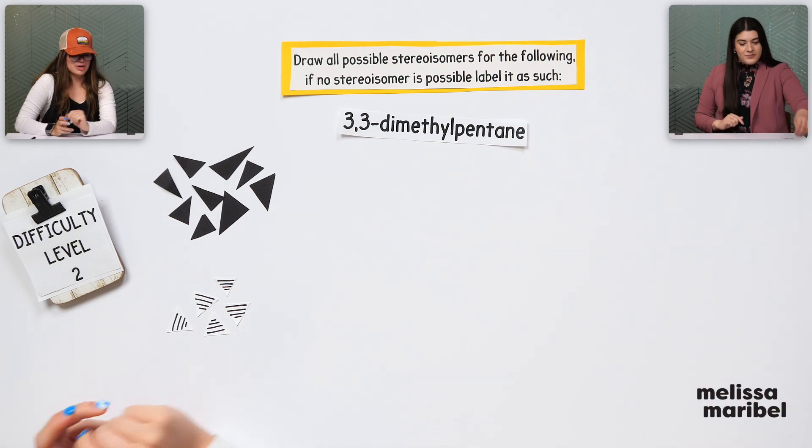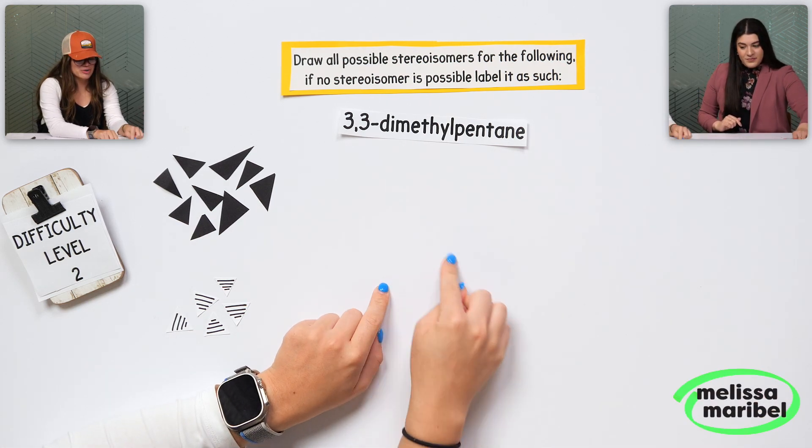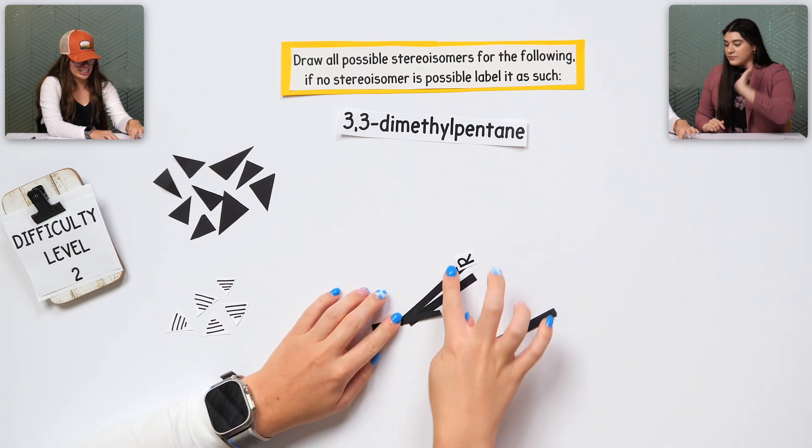What is this? Let's build it. So, pentane, there's five carbon, like that's the longest chain. Don't do that.